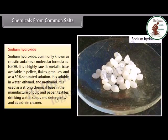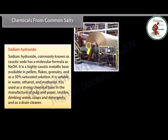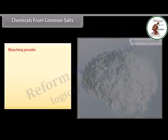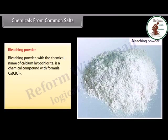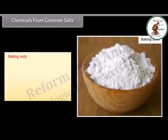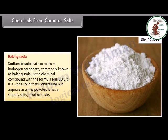Sodium hydroxide is used as a strong chemical base in the manufacture of pulp and paper, textiles, drinking water, soaps and detergents, and as a drain cleaner. Bleaching powder, with the chemical name calcium hypochlorite and formula CaClO2, is used mainly for water treatment and as a bleaching agent — it has greater chlorine available than sodium hypochlorite. Baking soda, sodium bicarbonate (NaHCO3), is a white crystalline solid with a slightly salty alkaline taste.